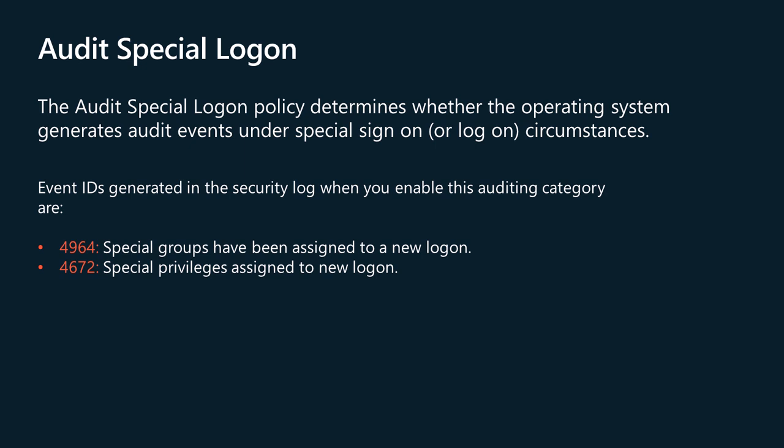The Audit Special Logon policy determines whether the operating system generates audit events under special sign-on or logon circumstances. This subcategory allows you to audit events generated by special logons such as: the use of a special logon, which is a logon that has administrator-equivalent privileges and can be used to elevate a process to a higher level; and a logon by a member of a special group. Special groups enable you to audit events generated when a member of a certain group has logged onto your network. You can configure a list of group security identifiers in the registry; if any of those SIDs are added to a token during logon and the subcategory is enabled, an event is written to the log. This subcategory is very important for auditing on domain controllers because of special groups-related events. This policy allows you to track account logon sessions to which sensitive privileges were assigned.